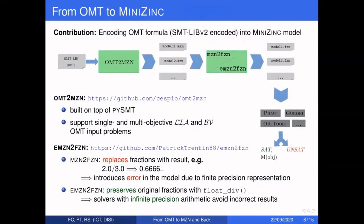The OMT-to-MiniZinc tool is a Python tool built on top of pySMT, able to translate single and multi-objective linear integer arithmetic and bit-vector OMT problems. To test empirically problems from both communities we had to introduce an extended MiniZinc-to-FlatZinc, because the standard tool performs deduction steps that replace critical fractions in the MiniZinc problem with finite-precision arithmetic representations, introducing errors — especially for OptiMathSAT which can use infinite-precision arithmetic.